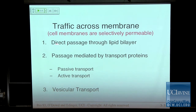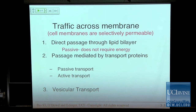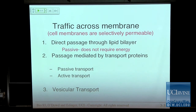There are three major passage strategies we're going to talk about in traffic. First is direct passage through the lipid bilayer, and this is always passive, meaning it does not require direct cellular energy. Second is passage mediated by transport proteins, and this can either be passive or active, using cellular energy. The third mechanism is vesicular transport, and this mechanism is always active. We're going to go over each of these three individually, and I'll give you examples of each.